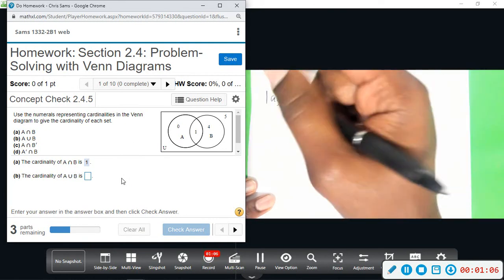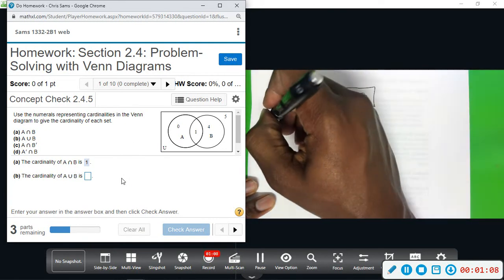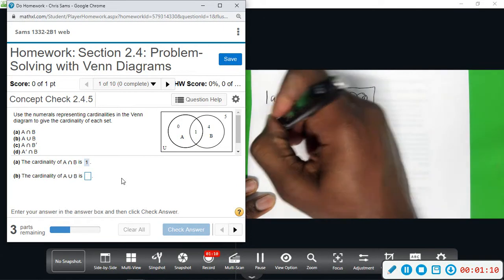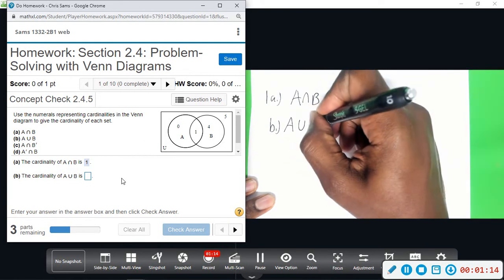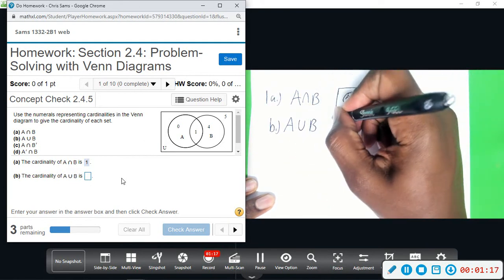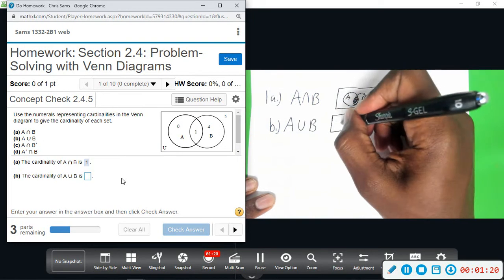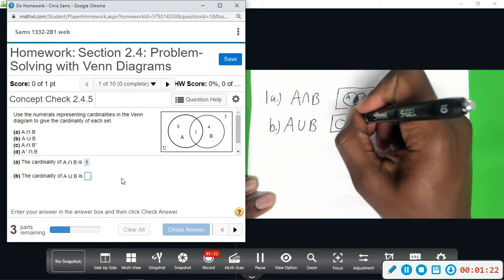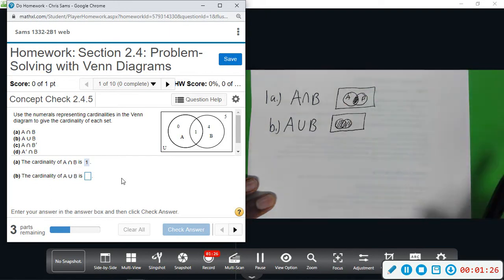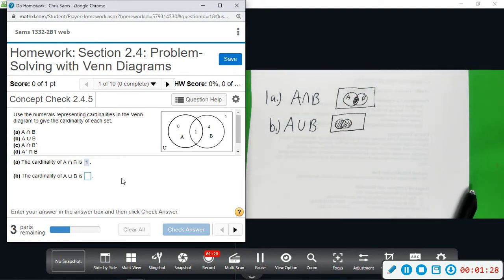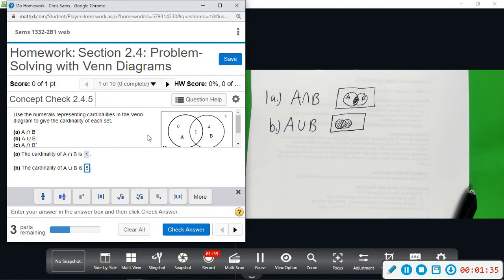Part B: we want to know A union B. That would represent all of A and B. So we have 0 plus 1 plus 4, so we get 5. We just add each of those pieces up and get a total of 5.